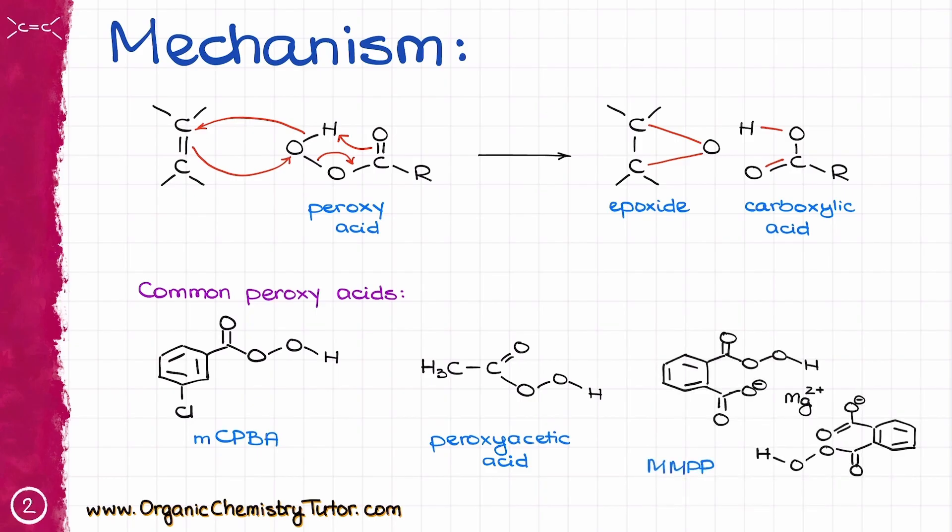So the last commonly used peroxyacid we are going to see is going to be MMPP, which stands for magnesium monoperoxyphthalate. Each of those peroxyacids have their drawbacks and benefits. For our purposes, they are essentially interchangeable. So you can use whichever you like most, and you'll likely see the MCPBA being the most commonly used one, so you'll probably see that most of the time in your course.